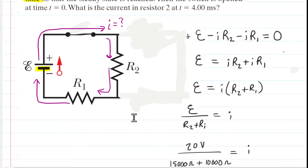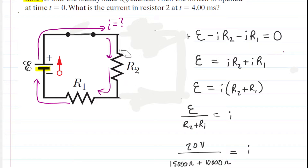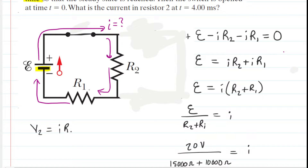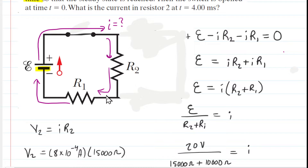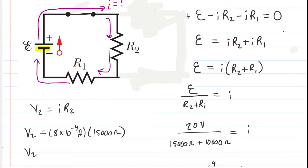Now you may wonder why we need to know the amount of current flowing through the circuit. Now that we have the current, we can calculate the specific potential drop across R2. We'll see in just a moment why we want the potential drop across R2. The potential drop across R2 equals the current flowing through it times the resistance value R2. Plugging in, we can see that the potential drop across R2 is 12 volts. Why is that important? Why aren't we looking at R1?